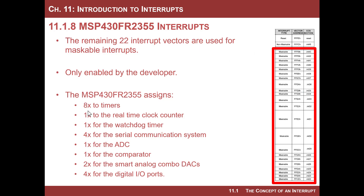These 22 maskable interrupt vectors are assigned as follows: eight for timers, one for a real-time clock, one for a watchdog timer, four for serial communication systems, one for the analog-to-digital converter, one for a comparator, two for a smart analog combo DAC, and four for digital I/O ports. That's what all these other addresses are.